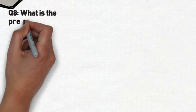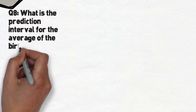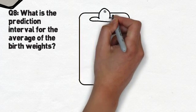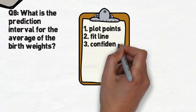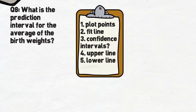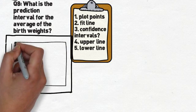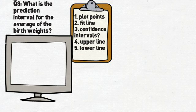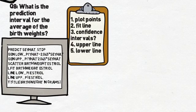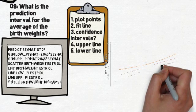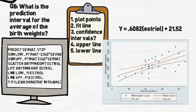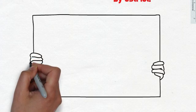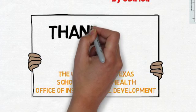Question 8 asks: what is the prediction interval for the average of the birth weights? We do the same thing again — scatter plot, regression line down the middle — then figure out the confidence interval for each estriol value and draw upper and lower confidence interval lines. We enter the Stata commands and get the output. Look how narrow that interval is — it means our formula can accurately predict estriol levels when you put in birth weights. The answer to this question is just the graph we've made. And that's all, folks — I hope you enjoyed this review for the final exam in Introduction to Biostats. Thanks for watching, and good luck on the exam!